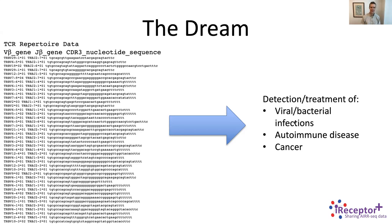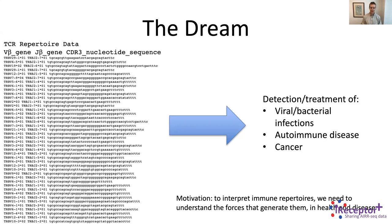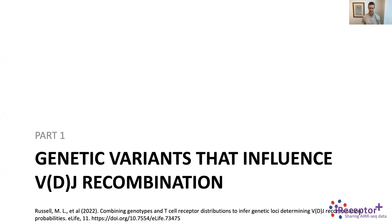The motivation for today's talk is that to interpret immune repertoires effectively, we really need to understand the processes that generate them — in healthy individuals and also in disease contexts. In the first part, we're going to be looking at common genetic variants, mostly single nucleotide polymorphisms, that influence the process by which T cell receptors are generated.